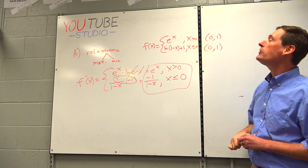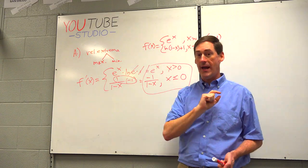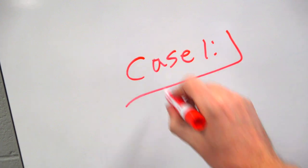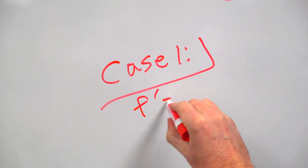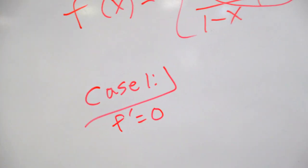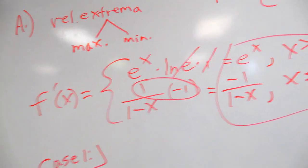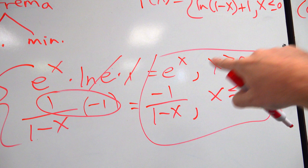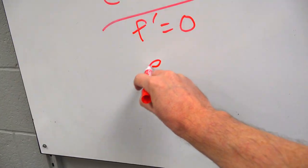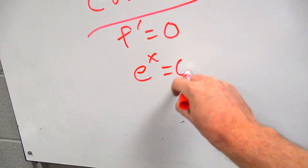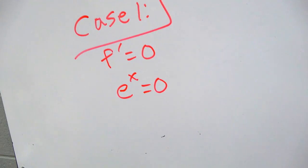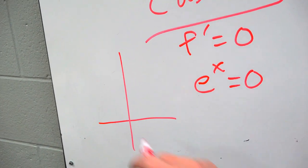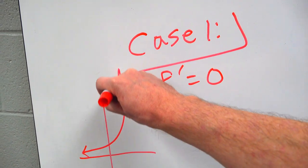Now we're going to do the first derivative test. You do Case 1 first. Is there any place where the derivative equals 0? First time we've done this with a piecewise function — you do have to check both functions. The top one's e to the x. Is there any place that e to the x equals 0? Two ways you can do this: one is just graphically. Isn't e to the x just exponential growth?